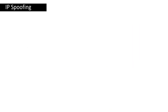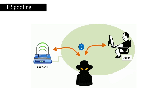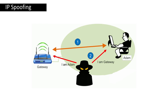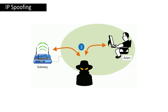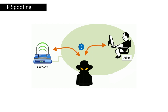IP spoofing is used to convince the victim that he or she is connected to a trusted and known entity. This ultimately results in the attacker gaining access to the system. The attacker starts communicating with the victim as if he knows the address and makes the victim accept the packet and infect the user's system.